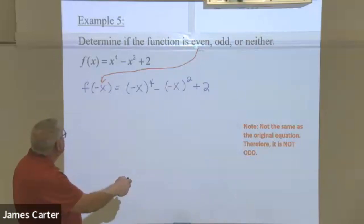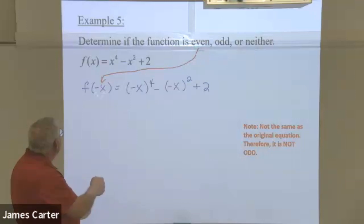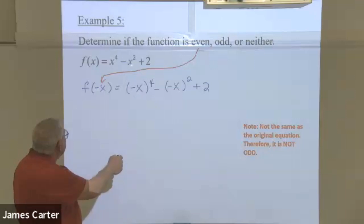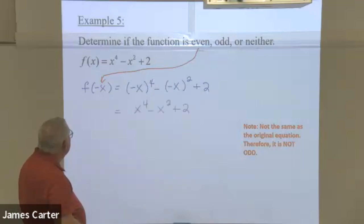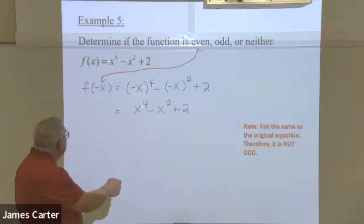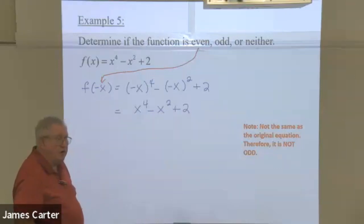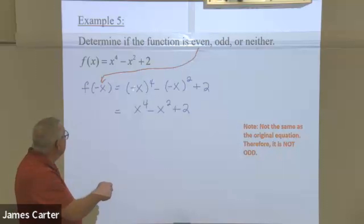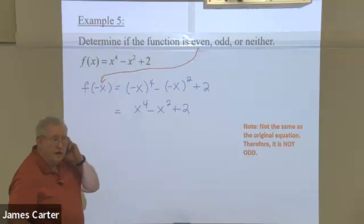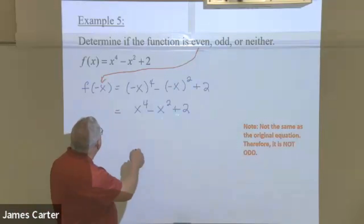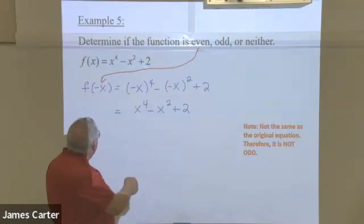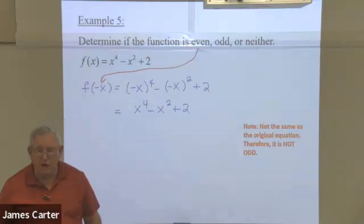We're going to test to see if it's even, so we're going to replace x with negative x. We put in negative x, there's that minus, and we simplify. Negative x to the fourth is the same thing as x to the fourth, because the even powers cancel out the negatives. Likewise, over here, the same thing. So as you see in this case, it results in exactly the same equation.